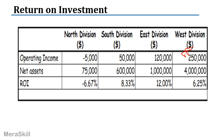Looking at the return on investment: North is minus 5,000 divided by 75,000 into 100, giving minus 6.67% — not considered. South: 50,000 divided by 600,000 gives 8.33%. East: 120,000 divided by 1 million gives 12%. And West division: 250,000 divided by 4 million gives only 6.25%. Looking at ROI, the preferred division is the one with the highest ROI — which is the East division at 12%.